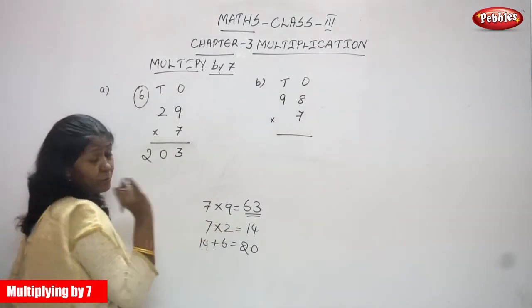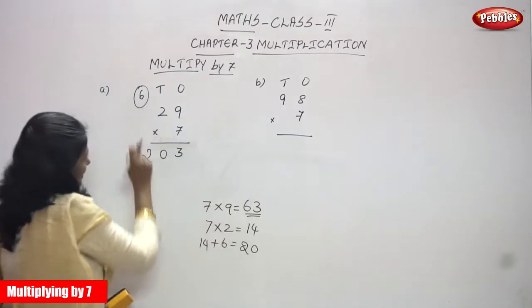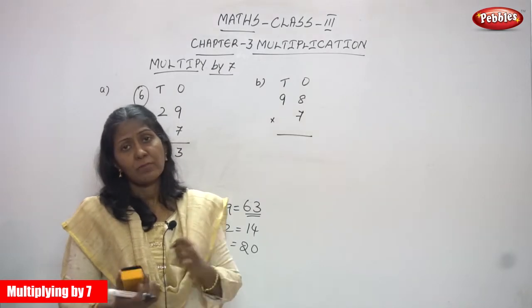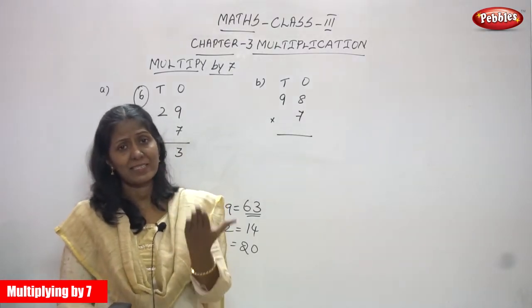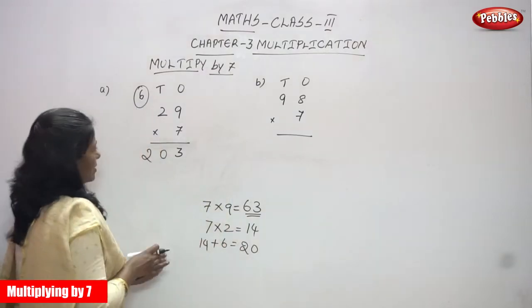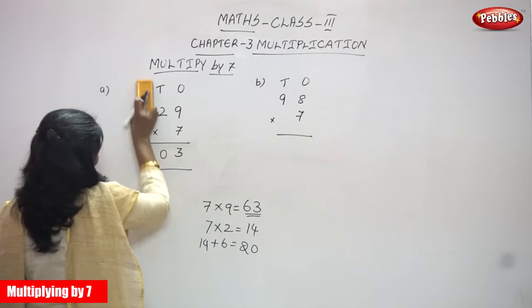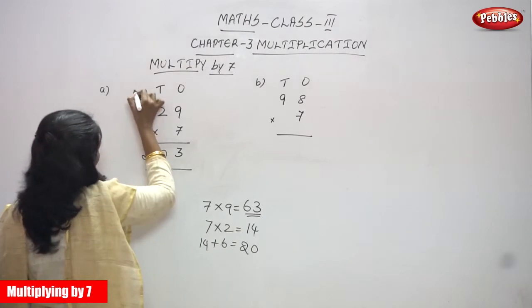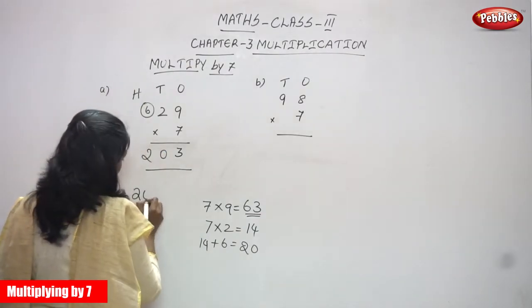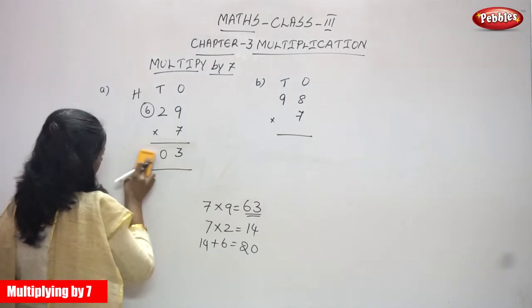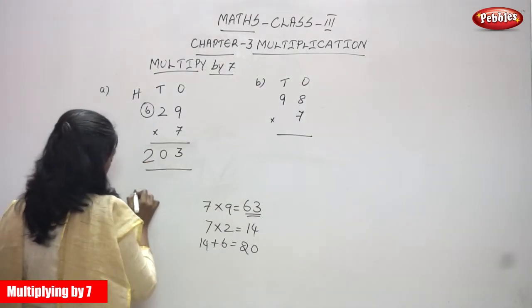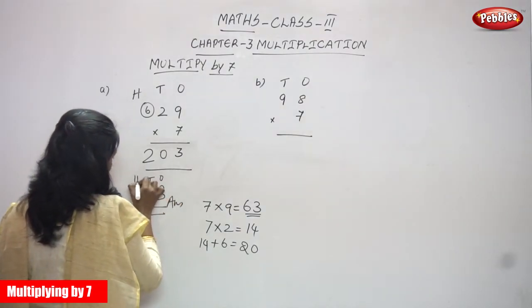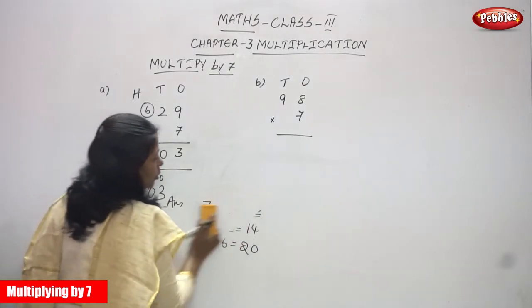Because 7 twos are 14, and 14 plus 6: count up 6 from 14 — 15, 16, 17, 18, 19, 20. The 6 is a carryover, so the answer is 203. This is the right answer. This is ones, this is tens, and this is hundreds. So the answer is 203.